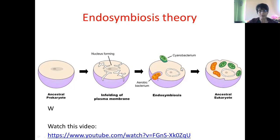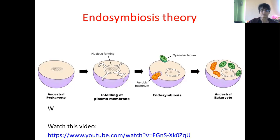So you can see here, this is the original cell and it engulfed a smaller unicell which was able to use oxygen. But it didn't digest it. Some of the mitochondria stayed, and you can see here that the actual unicellular organism only had one membrane, but then as it was engulfed by the cell membrane of the original cell, it ended up having two membranes. And then also there's DNA inside here, so that allows us to say that it could have been a separate organism that lived independently.